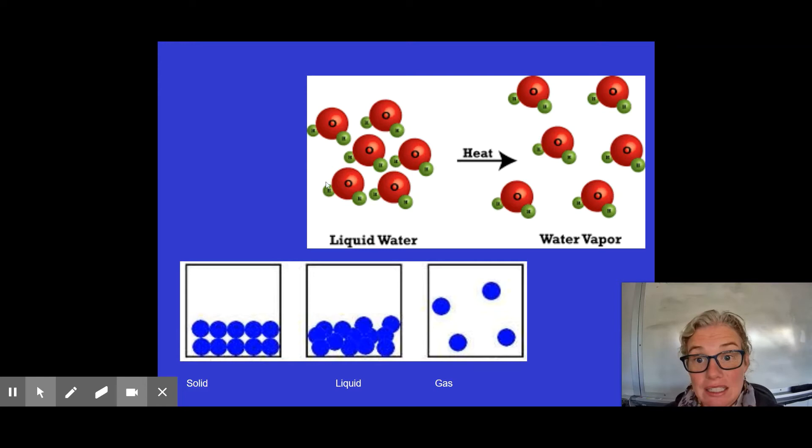Here's another example. In liquid water, all those water molecules are really close together. You heat it up and it becomes water vapor or steam and you see the oxygen is still attached to two hydrogens. Just each water molecule is further apart than the other water molecules.